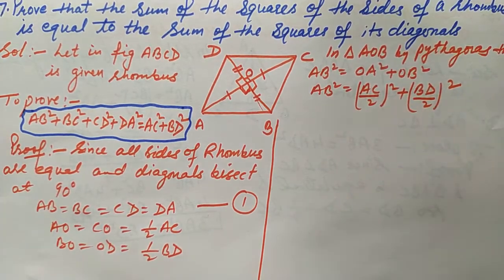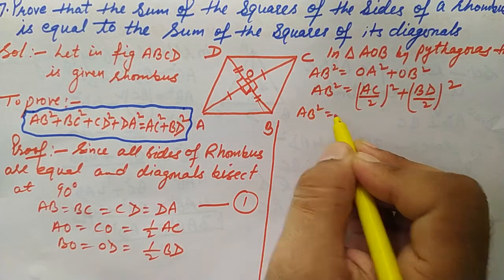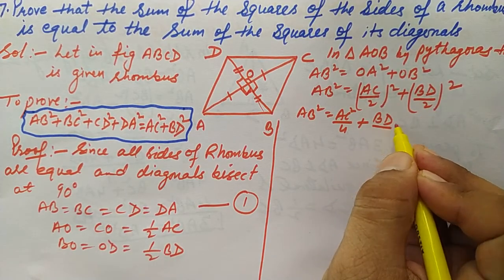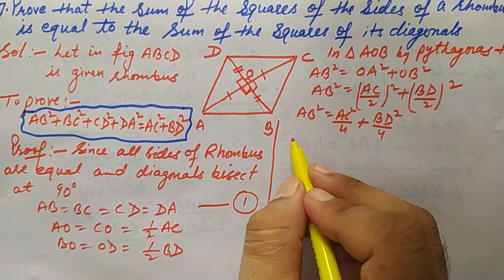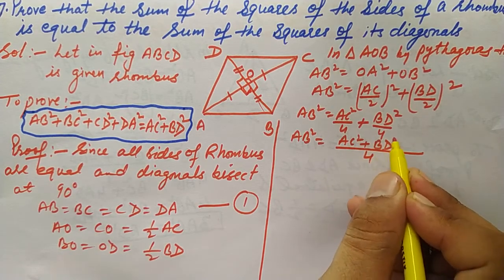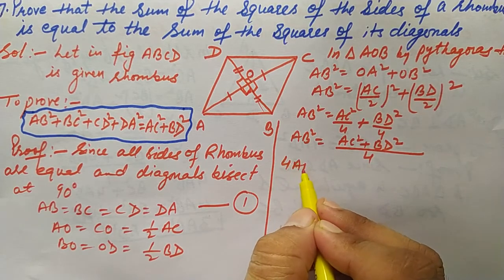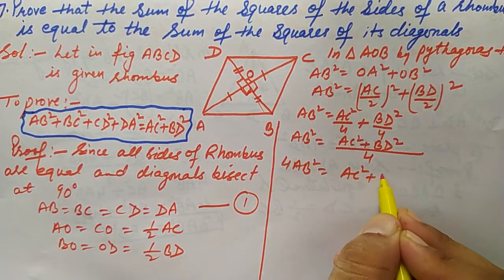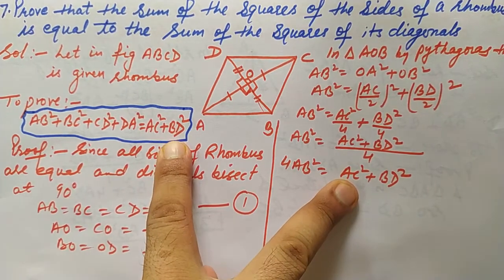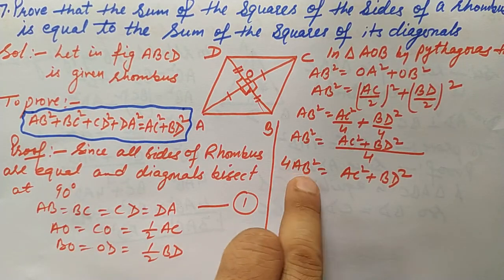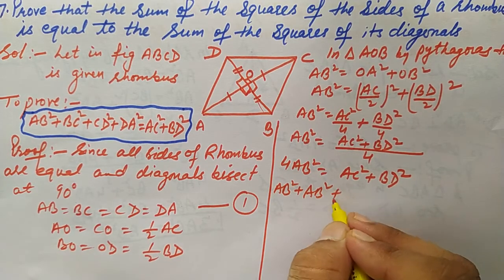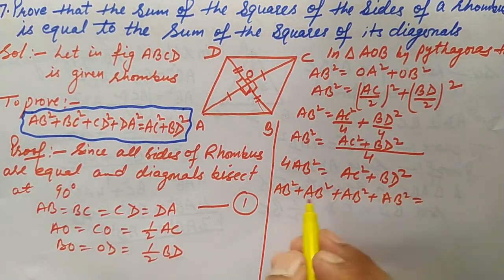So AB² = AC²/4 + BD²/4. Taking LCM as 4: AB² = (AC² + BD²)/4. Cross-multiplying, we get 4AB² = AC² + BD². This is the right-hand side of what we need to prove. Now we expand the left-hand side: 4AB² = AB² + AB² + AB² + AB².